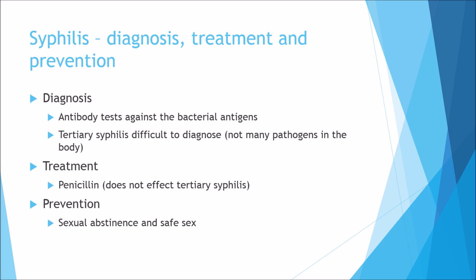For diagnosis, we can do an antibody test. However, tertiary syphilis is really difficult to diagnose because in that stage there are not many pathogens in the body — blood samples may come back negative even though spirochetes are still present. For treatment, the ideal drug is penicillin, but this does not affect tertiary syphilis; it only works if you catch it early in the primary or secondary stage. To prevent syphilis, the most obvious measures are sexual abstinence and safe sex, so it won't spread between partners.